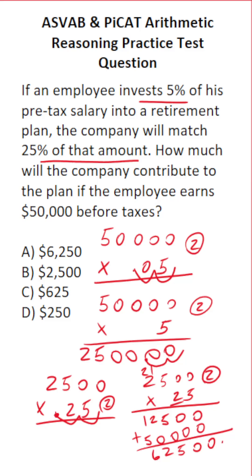Bringing in our two decimals, the company will match $625. So the answer is C.